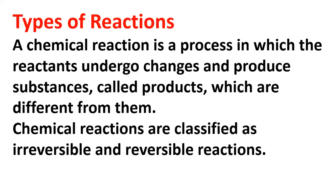Chemical reaction is a process in which reactants undergo chemical changes — like breaking of bonds such as covalent bonds, ionic bonds, and metallic bonds. The reactants' bonds will be broken, some component elements will merge with others, and then a product will be formed. So reactants undergo changes and produce substances called products, which are different from them.